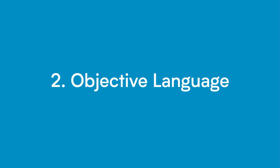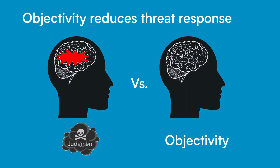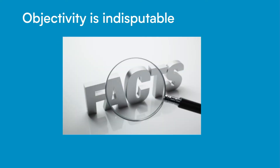The second step to mastering difficult conversations is the ability to describe the situation using completely objective language. Objectivity minimizes the chance of triggering a defensive response in others, and also ensures that what you say is indisputable. This prevents you from getting into fruitless, circular arguments over what someone may or may not have intended, and that's not helpful for making progress on the conversation.